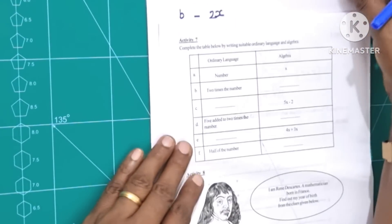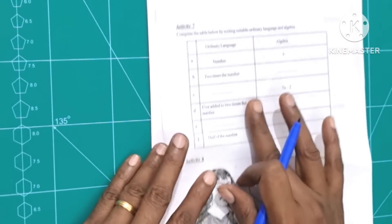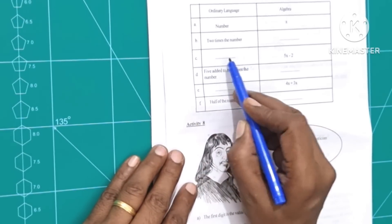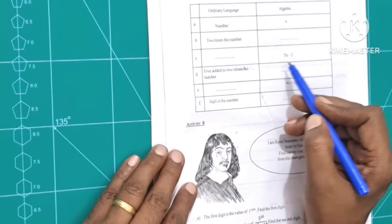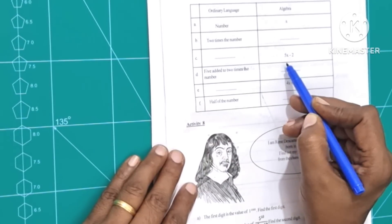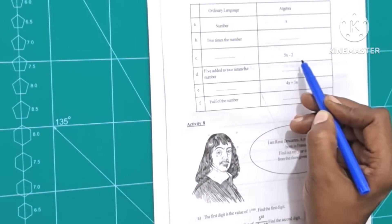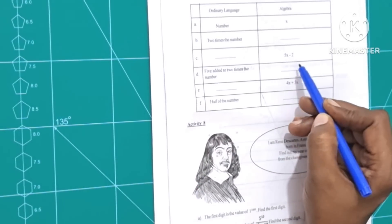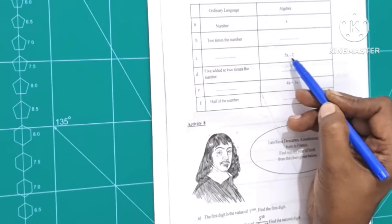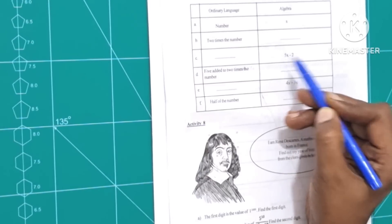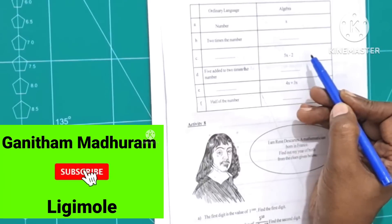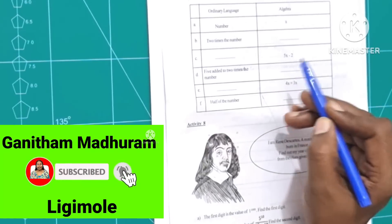We will call it N. This is C. This is the ordinary language — this is the algebra. What is the algebra? 5x minus N. This is X. This is N.